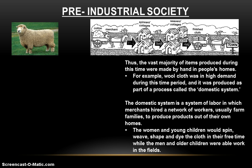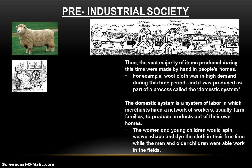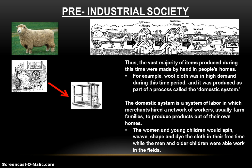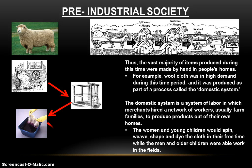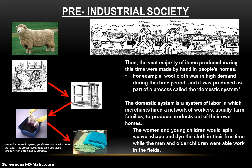Merchants would hire a network of workers, usually farm families, who would do the work during their downtime or during the non-growing season to produce the products out of their homes. For example, the merchant goes to the shepherd who shears his sheep and buys the wool. Then the merchant takes the wool to a farm family who will spin it into yarn and pays them. He then takes the yarn to another farm family who weaves it into cloth, pays them, then takes it to another family who will dye the cloth, until finally you have the finished product.